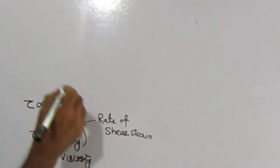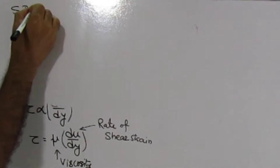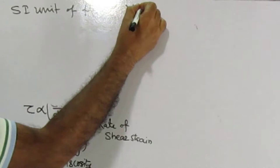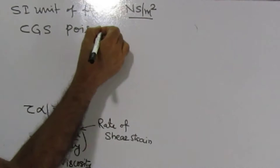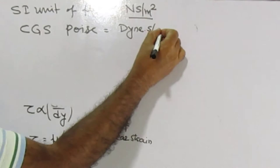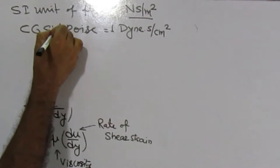The SI unit of viscosity is Newton second per meter square. The unit of viscosity in CGS is also called poise, where 1 poise equals 1 dyne second per centimeter square.